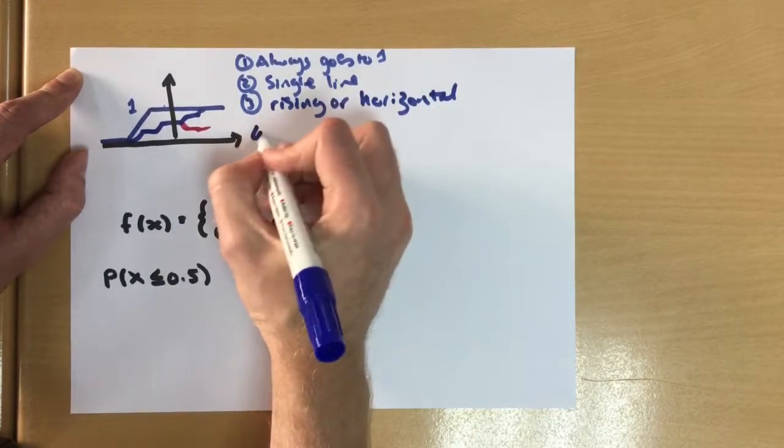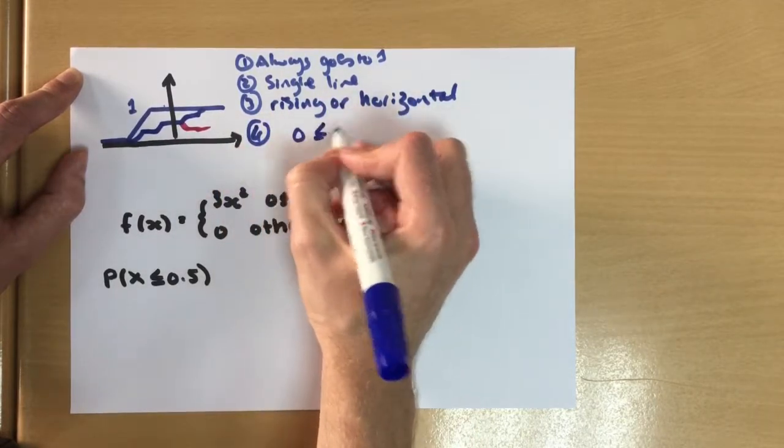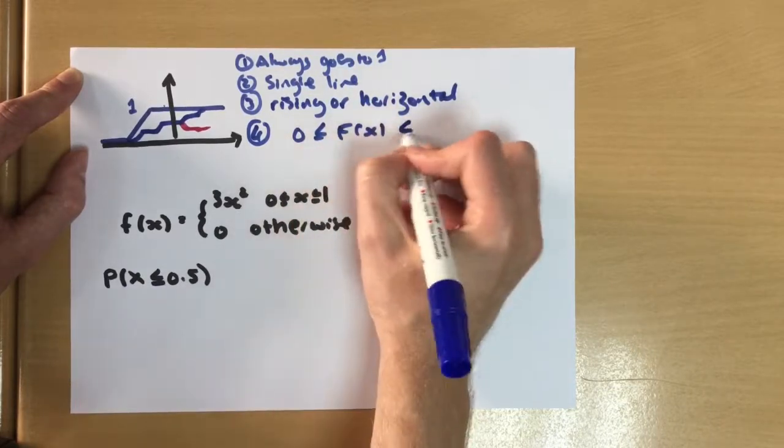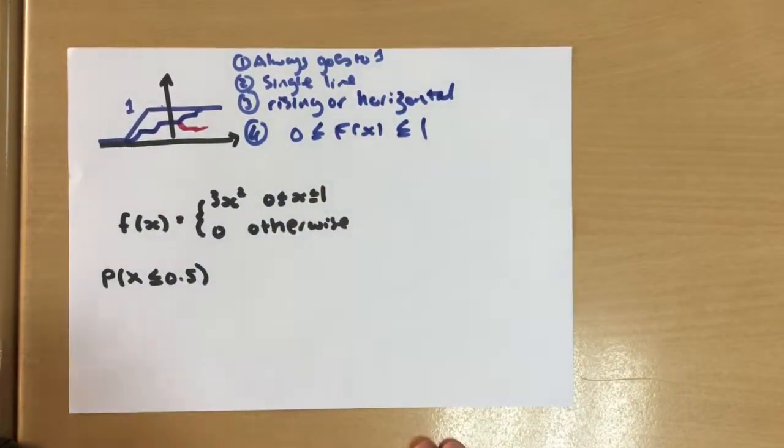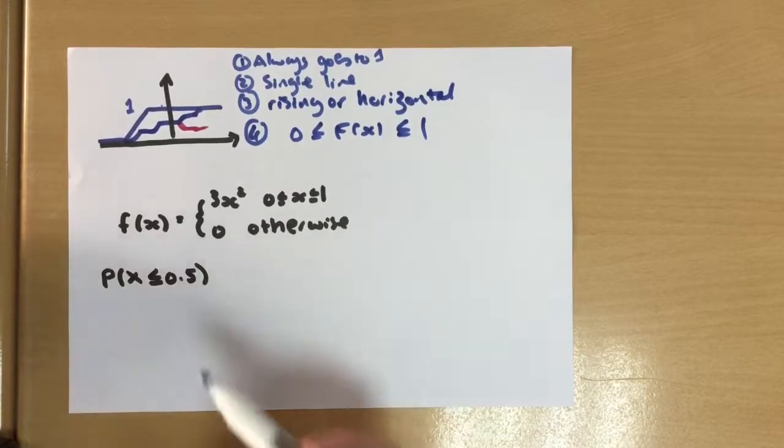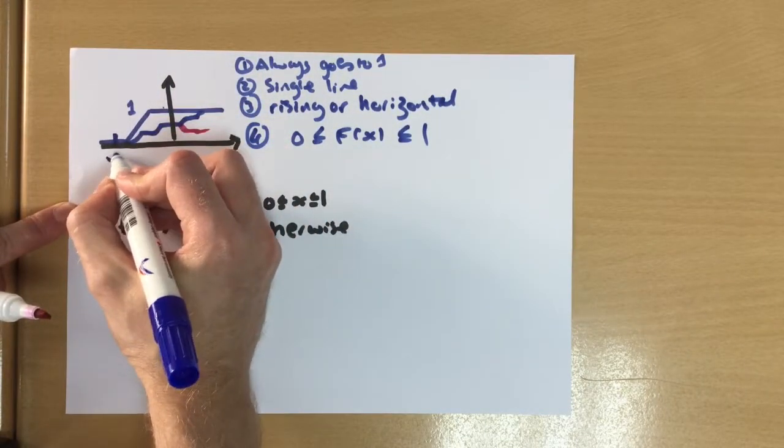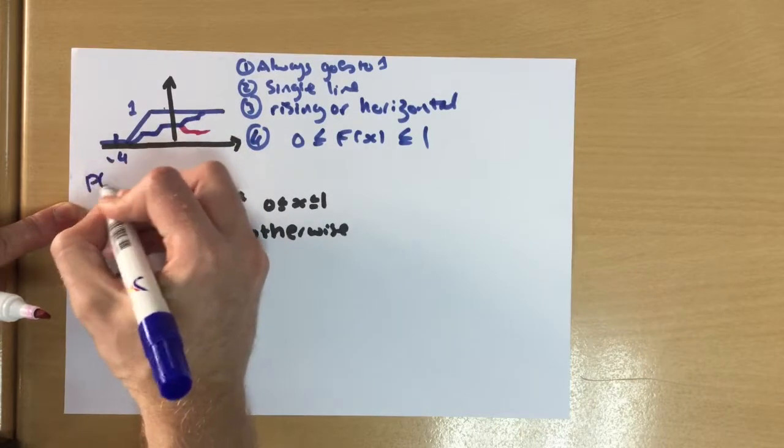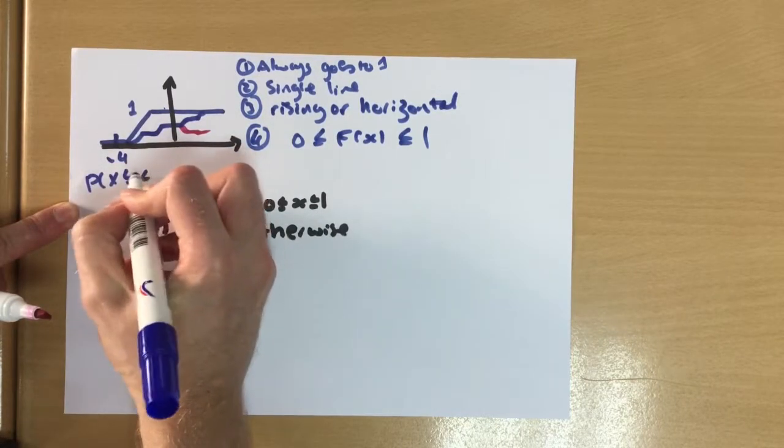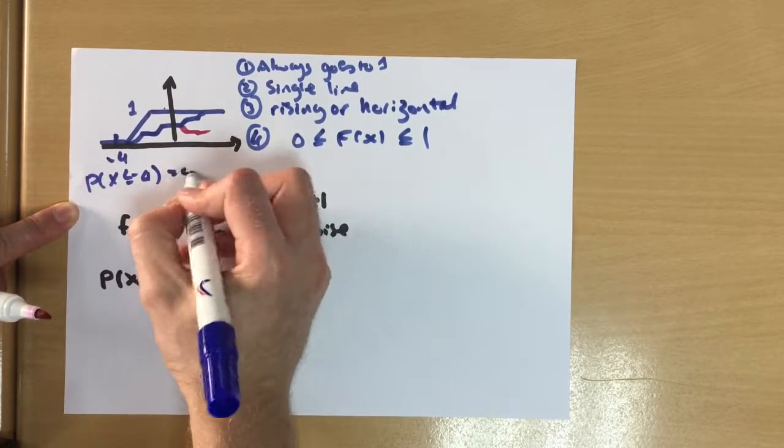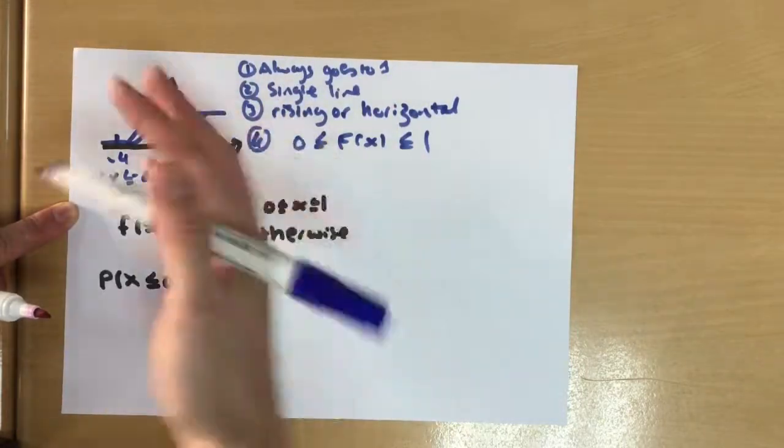Then lastly is that our cumulative function will always take a value between zero and one. Either we're down this end, in which case, if that's a negative four, the chance of anything less than negative four is going to be zero.